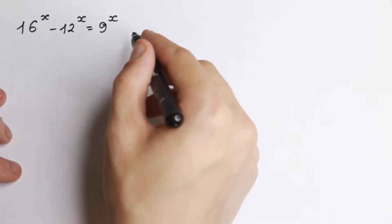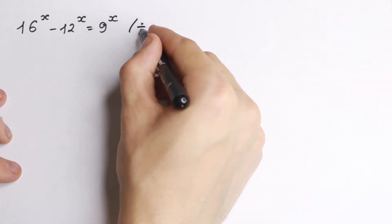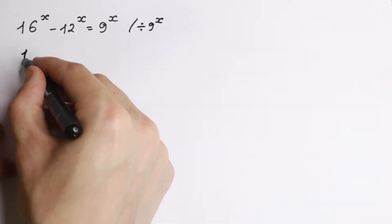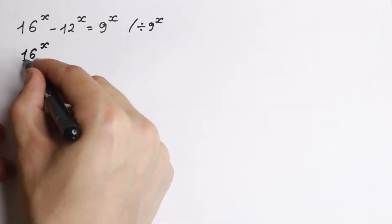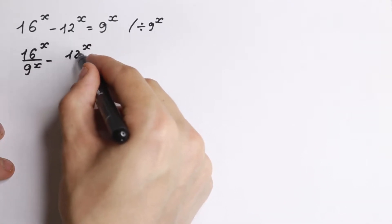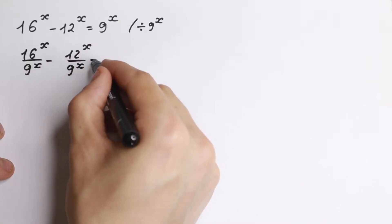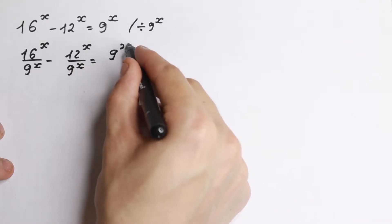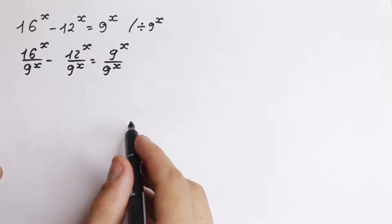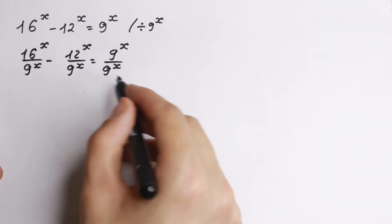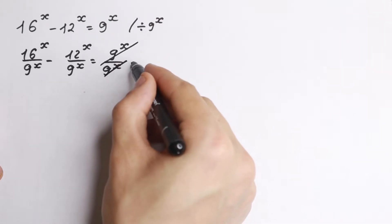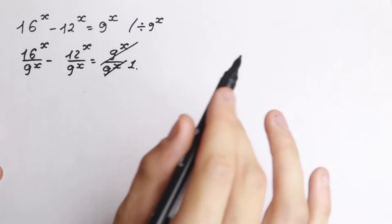First of all, let's divide both sides by 9 to the x. If we divide it, we will have 16 to the x over 9 to the x, minus 12 to the x over 9 to the x, equal to 9 to the x over 9 to the x. We can easily cancel this and we will have 1 on the right.